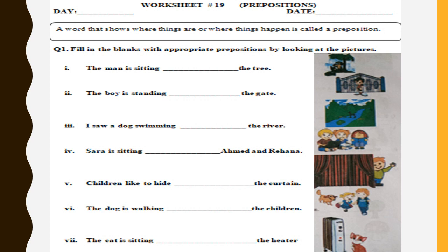First: the man is sitting ___ the tree. Look at the picture and tell me — where is the man sitting? Yes, the man is sitting under the tree. Very good! Second: the boy is standing ___ the gate. Where is the boy standing? Very good — the boy is standing in front of the gate.